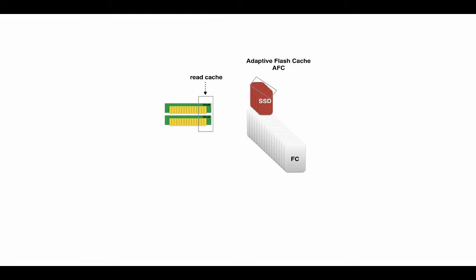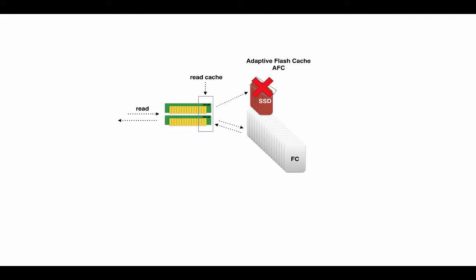Now with AFC, if a read request comes into DRAM and it's in DRAM, great — acknowledge the host. If it's not in DRAM, the system can go to the AFC cache pool, and if it's there it can copy that back into DRAM and acknowledge the host. That whole process is a lot faster than going to FC. If the read request isn't in DRAM and isn't in AFC either, then the system goes to the FC drives to pull it in.